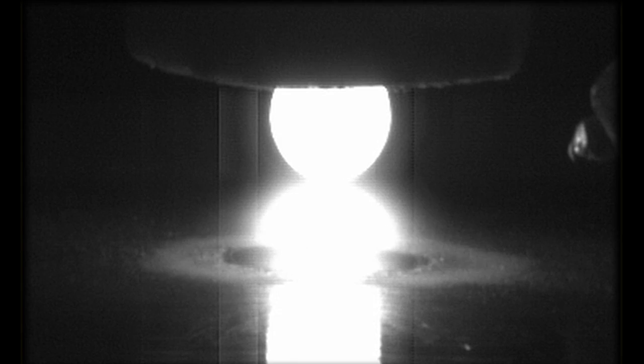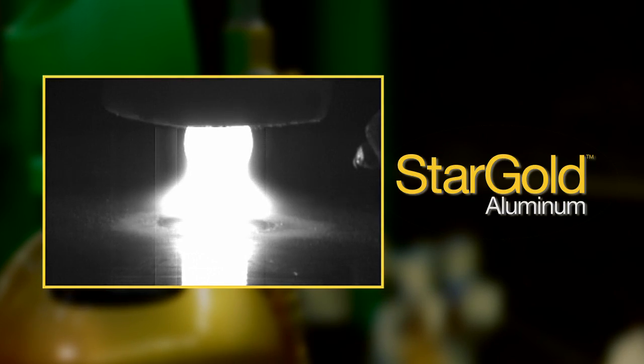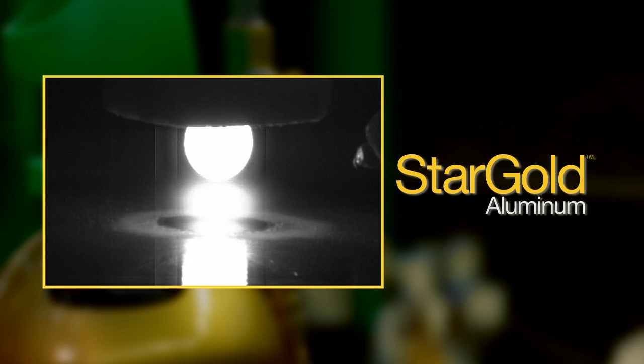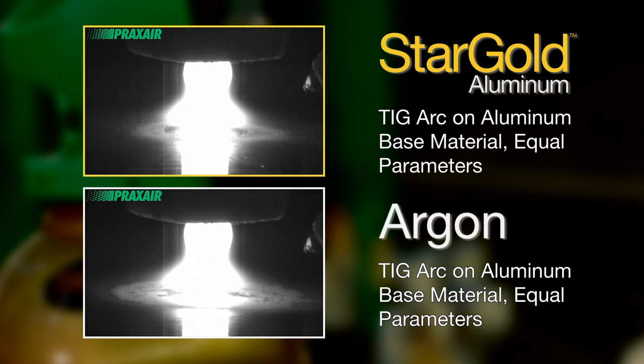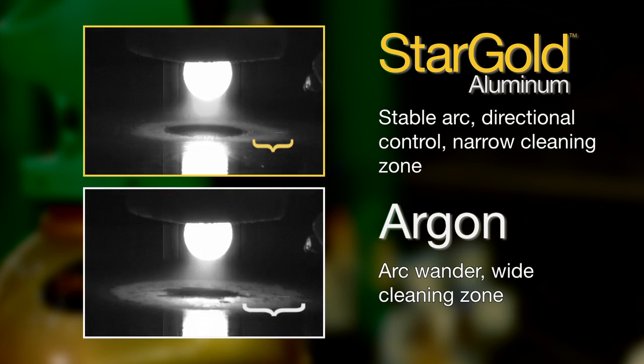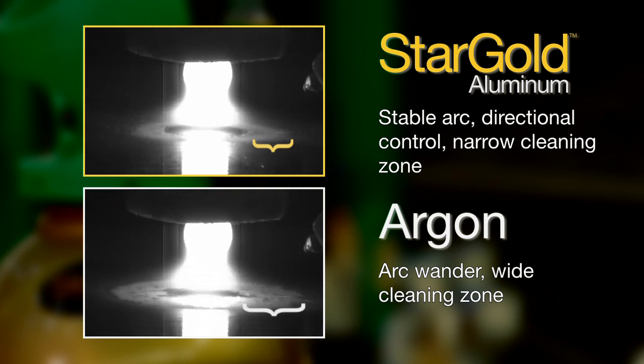This high-speed video of an AC TIG arc shows how the Stargold Aluminum Shielding Gas can enhance the performance of the arc. Typically, when using pure argon as the shielding gas, the arc attaches to the workpiece in an erratic manner. This results in arc wander and a wide cleaning zone.